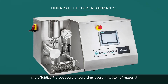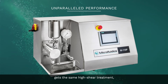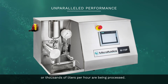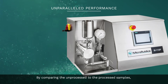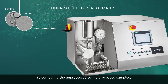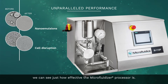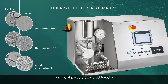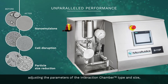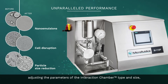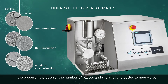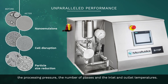Microfluidizer processors ensure that every milliliter of material gets the same high shear treatment, regardless of whether a one milliliter batch or thousands of liters per hour are being processed. By comparing the unprocessed to the processed samples, we can see just how effective the microfluidizer processor is. Control of particle size is achieved by adjusting the parameters of the interaction chamber type and size, the processing pressure, the number of passes, and the inlet and outlet temperatures.